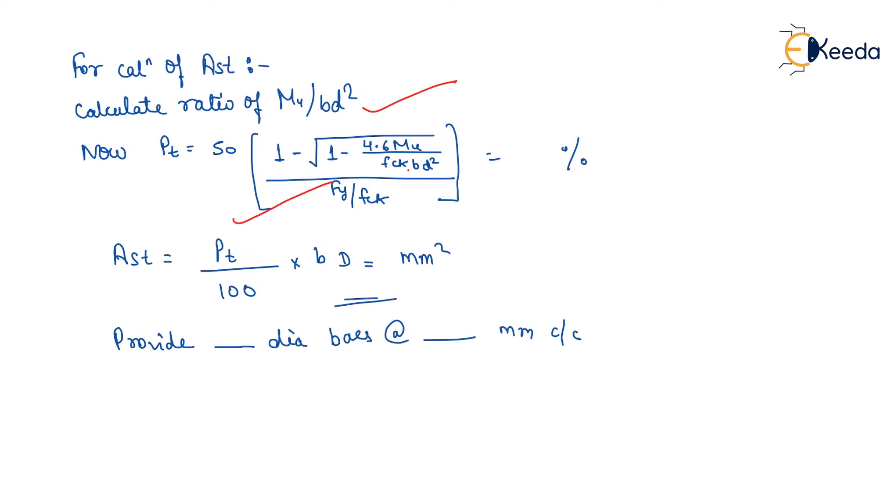Now we will calculate Ast. Ast equals (Pt/100) × b × D. We will calculate Ast in mm². Now according to Ast, we will provide diameter of bar at spacing center to center.